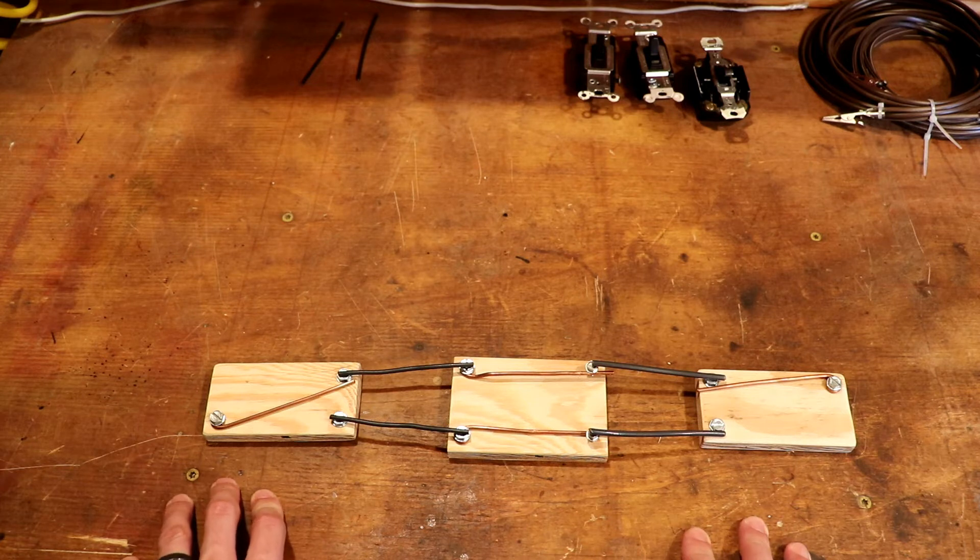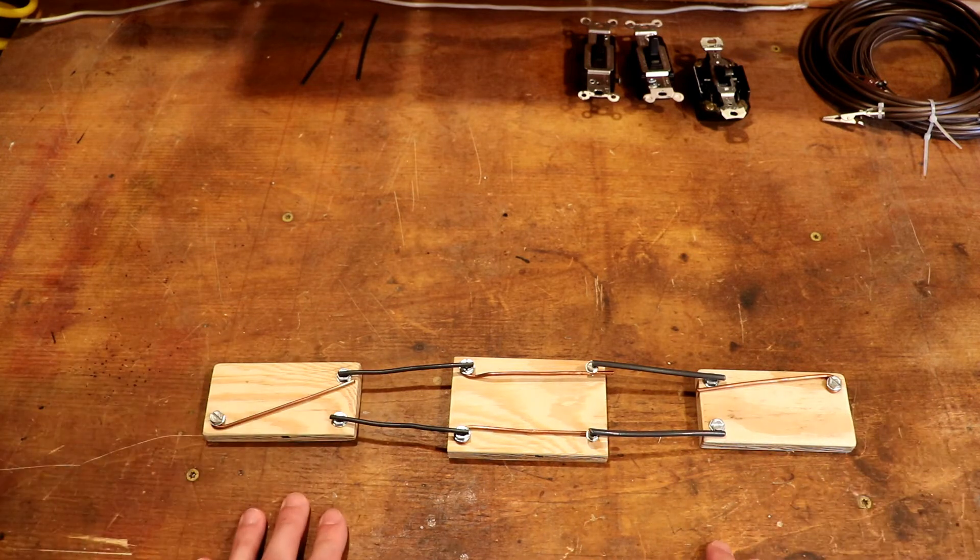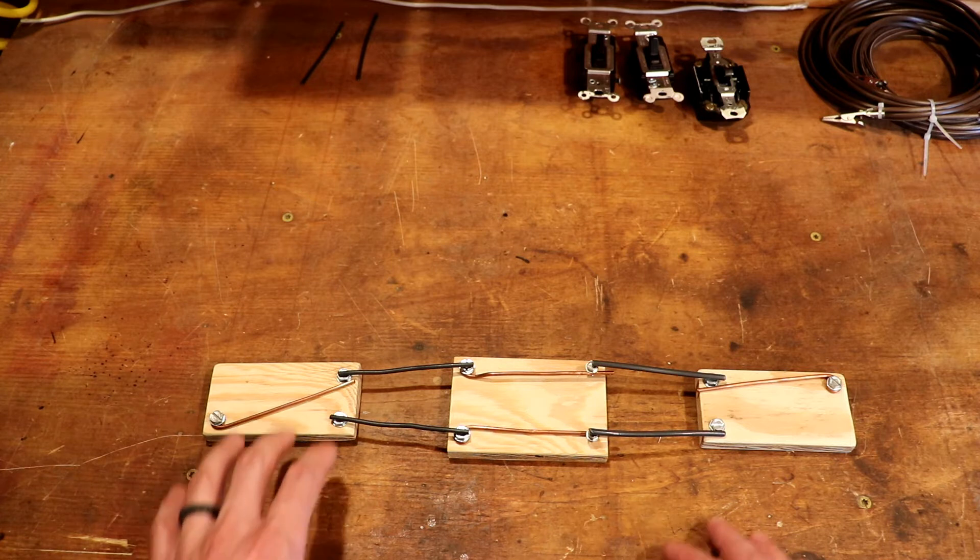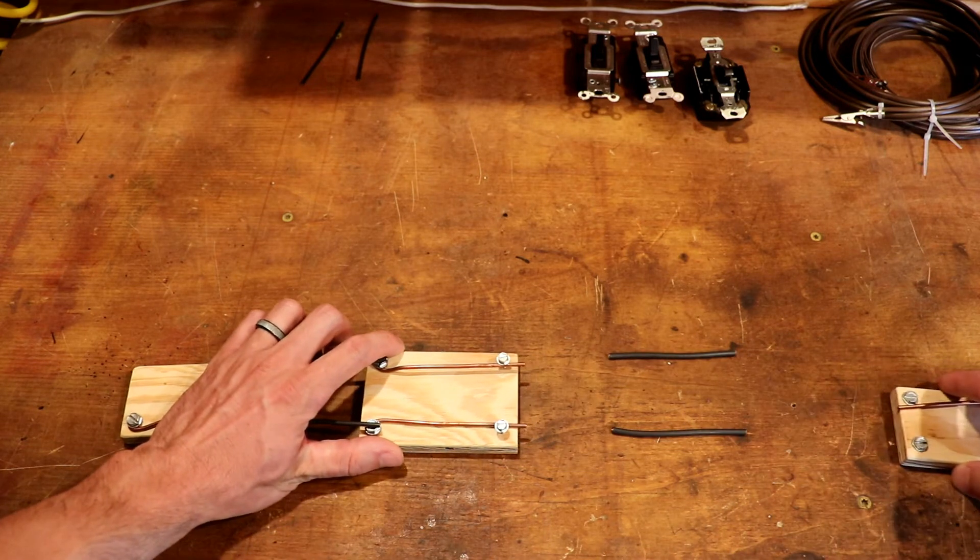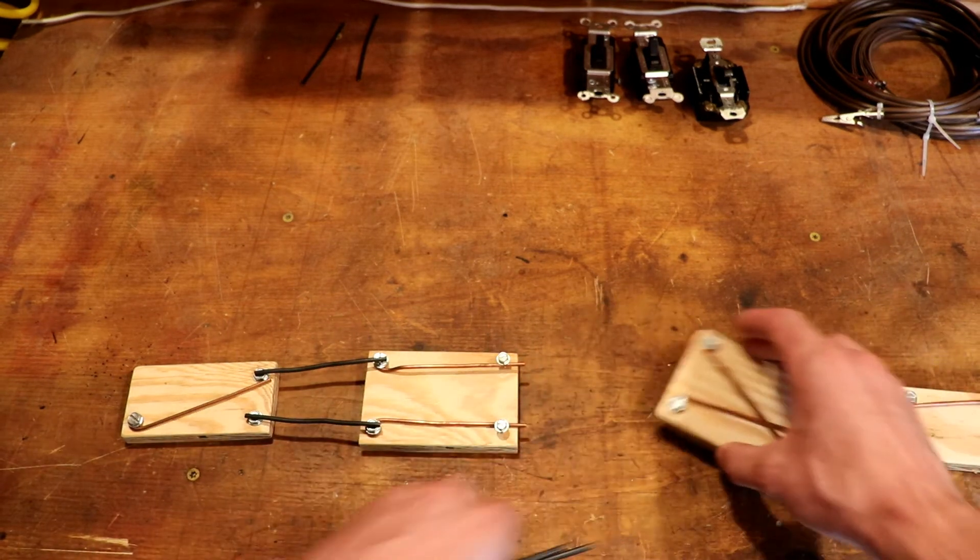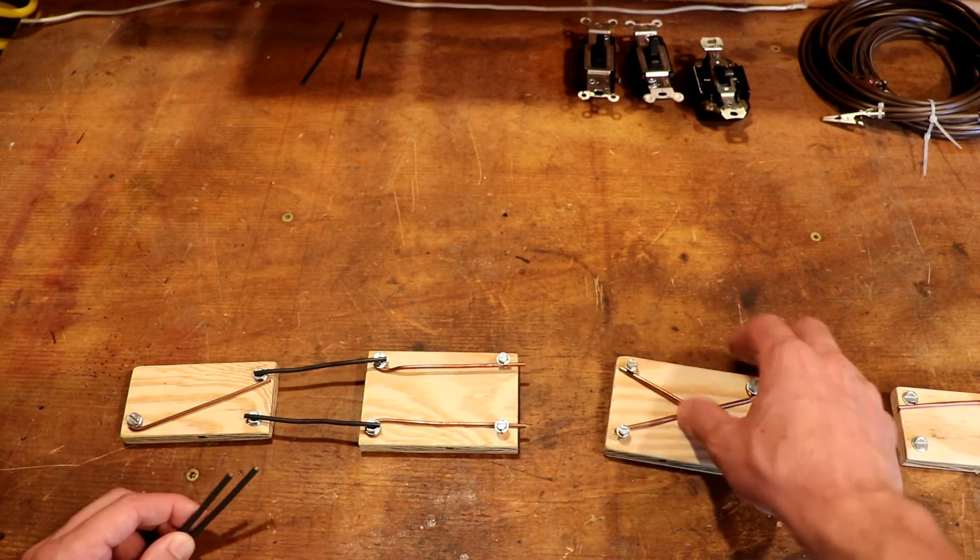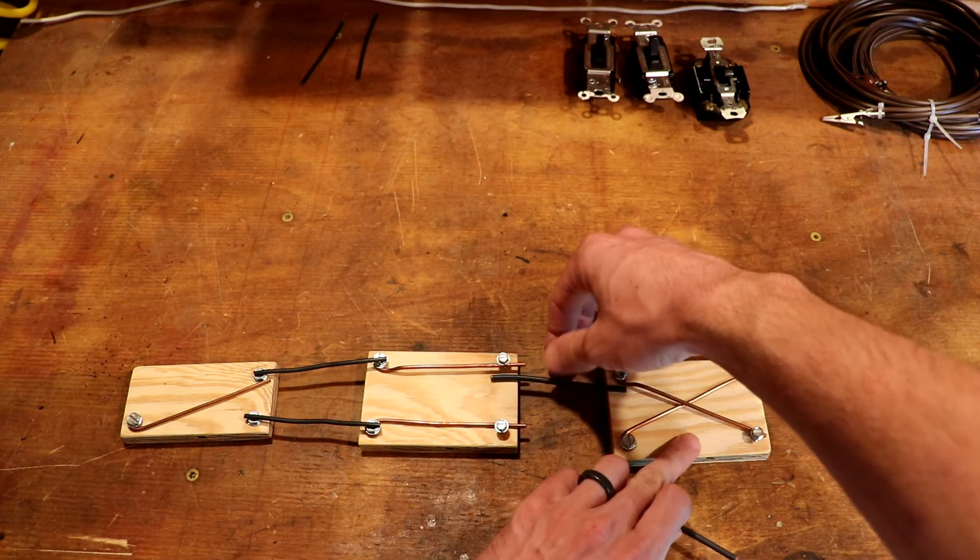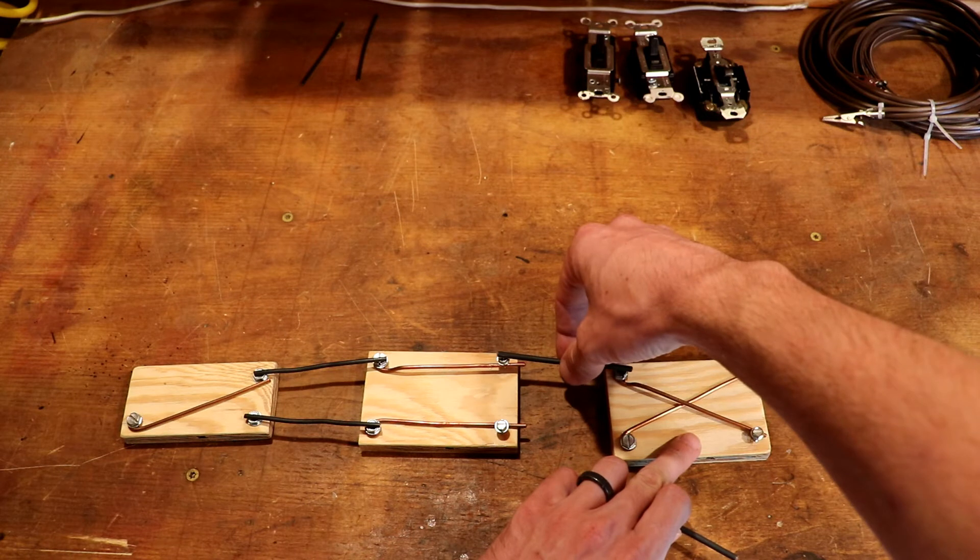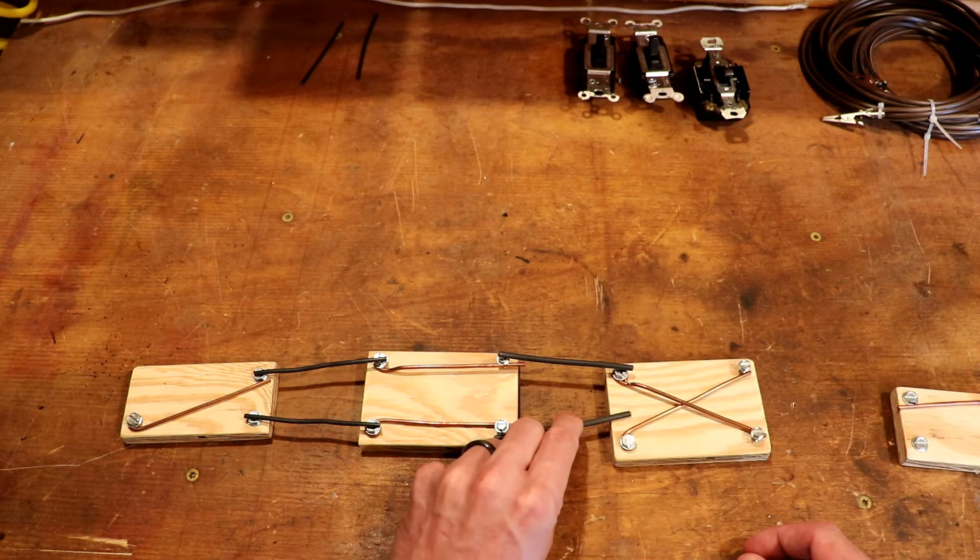If we wanted to add another switch in here, say this is in the middle of a giant room and we wanted a light at each of the four corners, all we have to do is spread this out, grab another four-way switch, put it in here and put it in this way so it's all oriented in the same direction.